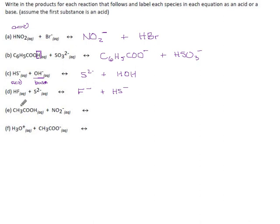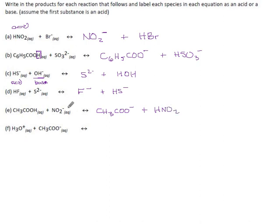Ethanoic acid, or acetic acid, will lose the hydrogen on the carboxyl group, and it loses a charge at the same time. The nitrite ion will acquire that hydrogen, so it becomes HNO2, and its charge goes from negative 1 up to 0.